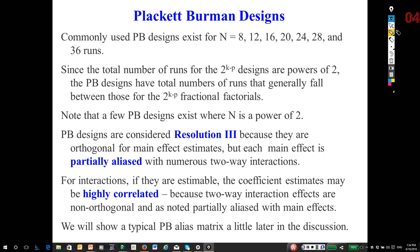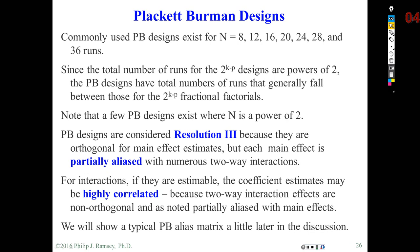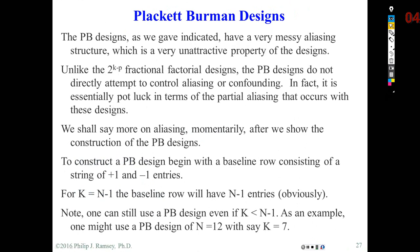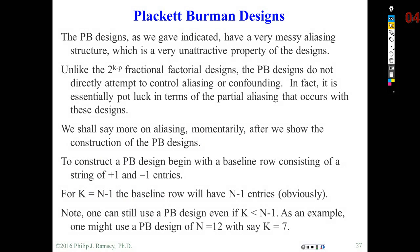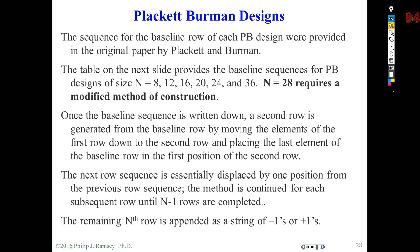Unfortunately, each main effect is partially aliased with every two-way interaction not including that main effect. In many cases that means you're going to have a lot of partial aliasing. They have a very messy aliasing structure involving two-way interactions. On the other hand, they're actually very efficient — you could experiment with k factors in n minus one runs.